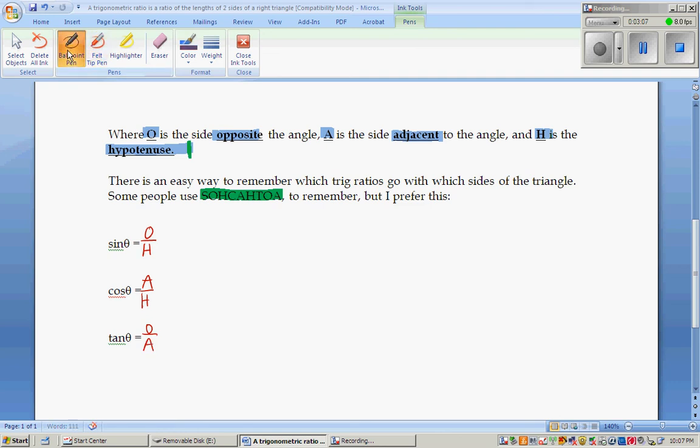The way that you can remember these is just to remember this sentence. O, heck, another hour of algebra. If you can just remember that one sentence, you will always be able to label sine, cosine, and tangent.